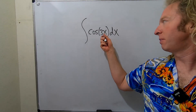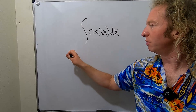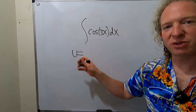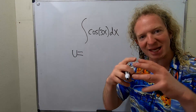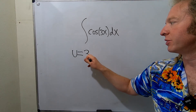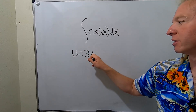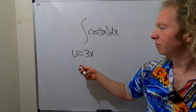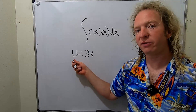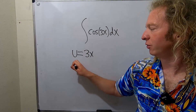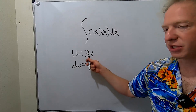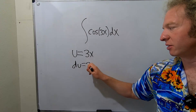We'll start by letting u be equal to the inside piece — in this case, it's what's inside the trig function. So u equals 3x. Now we compute du. The derivative of u is simply du, and here we just get 3dx.